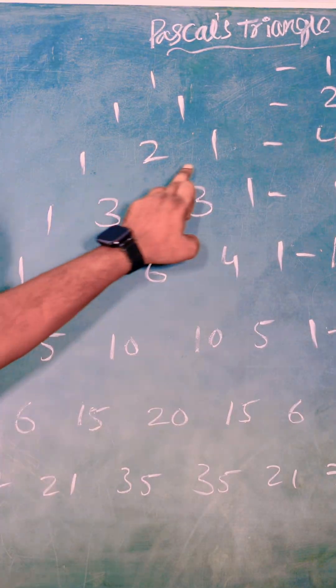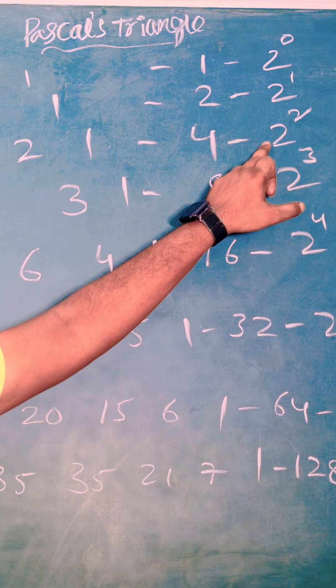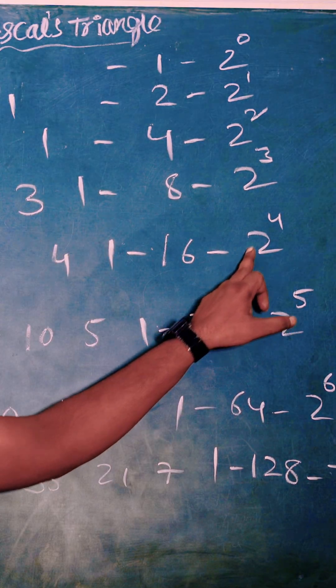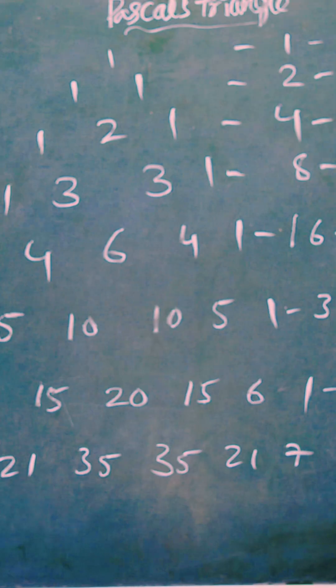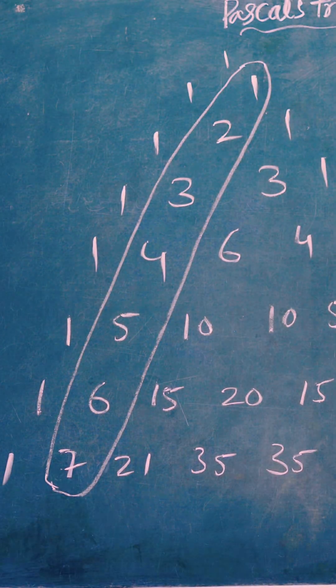Here that means every row, sum of the digits is power of 2. 1 plus 2 plus 1 is 4, which means 2 square. Here 1 plus 4 plus 6 plus 4 plus 1 equals 16, which means 2 power 4. Next one, the second diagonal always contains natural numbers.